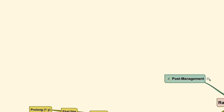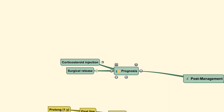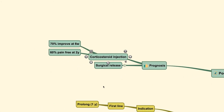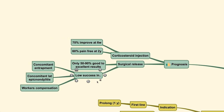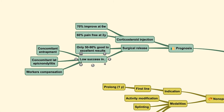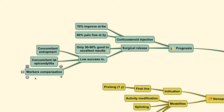For the post-management program, the prognosis of corticosteroid injection shows that usually 60% remain pain-free at the two-year period. Surgical release allows 50 to 90% good to excellent results, but low success is usually found if there is concomitant lateral epicondylitis. There could also be a relation to workers' compensation, because if there is a compensation claim, patients will often keep on complaining and show no improvement due to the compensation they receive.